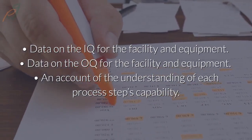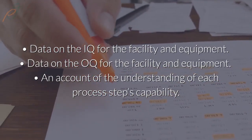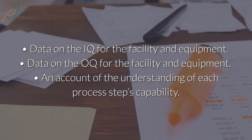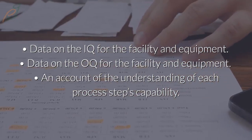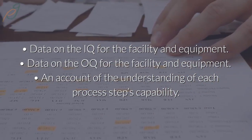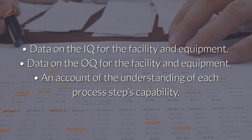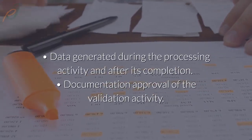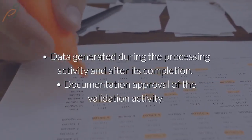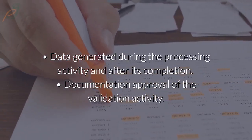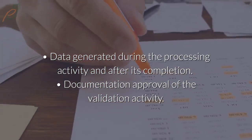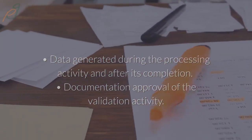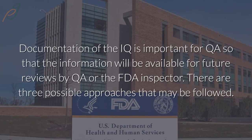Quality assurance requires that the total process validation document include the following: data on the IQ for the facility and equipment, data on the OQ for the facility and equipment, an account of the understanding of each process step's capability, data generated during the processing activity and after its completion, and documentation approval of the validation activity.